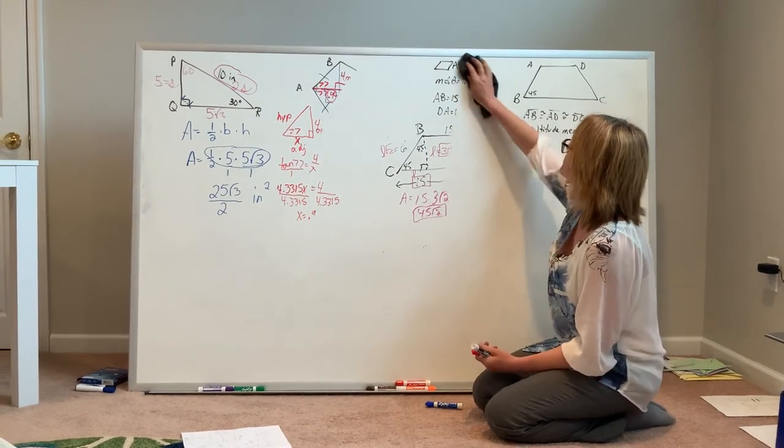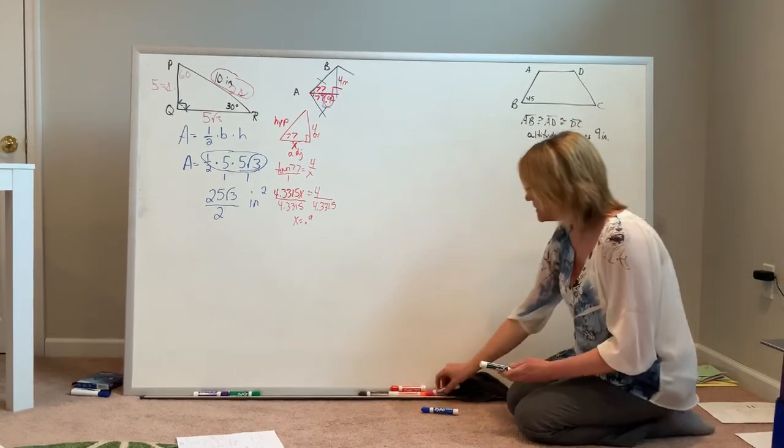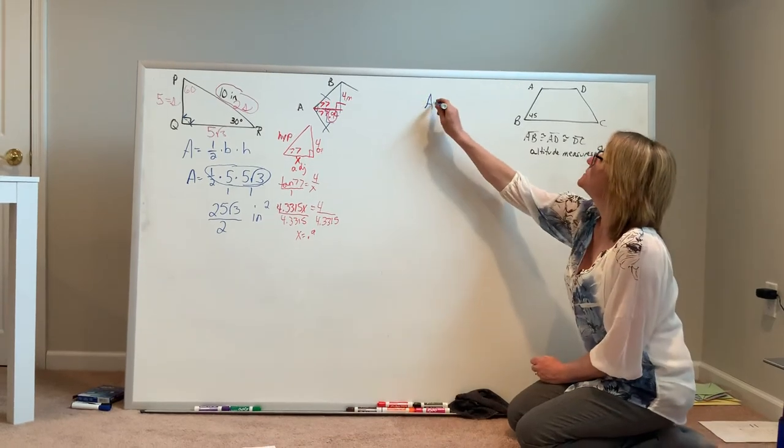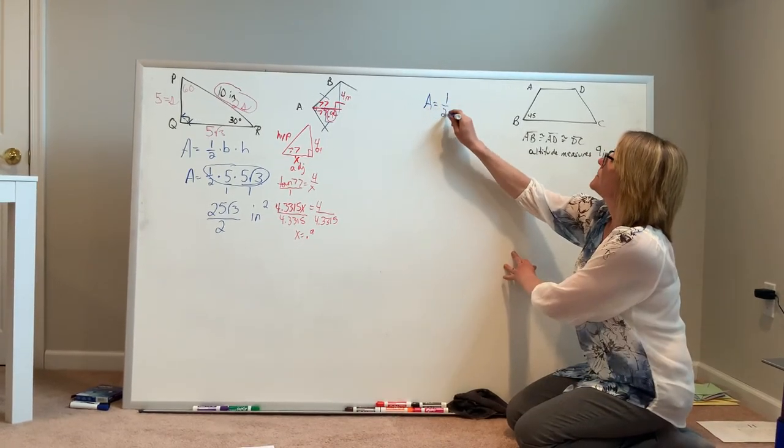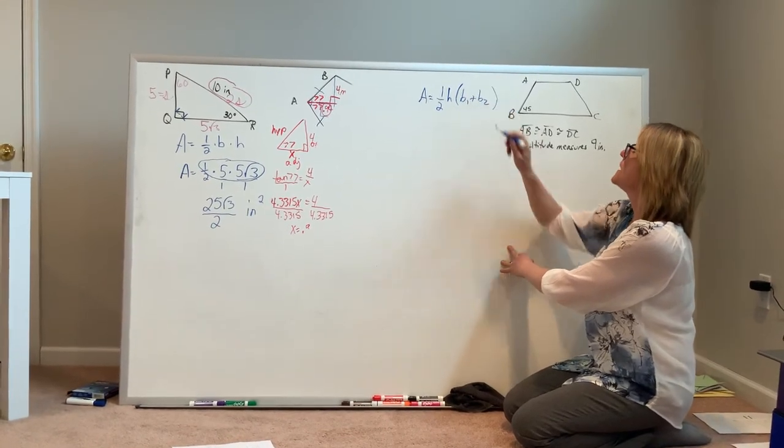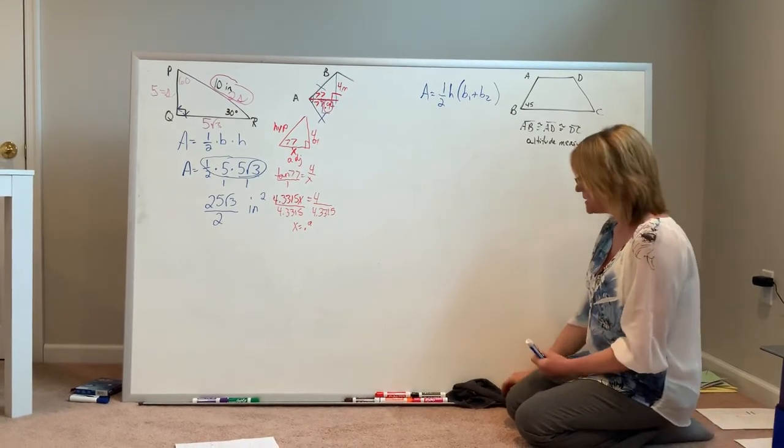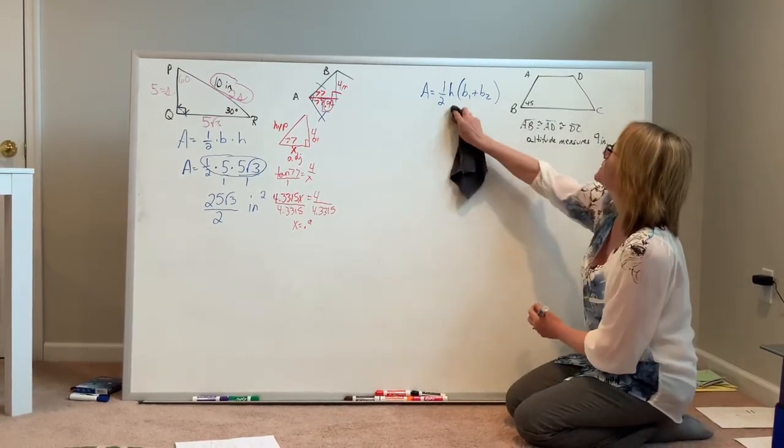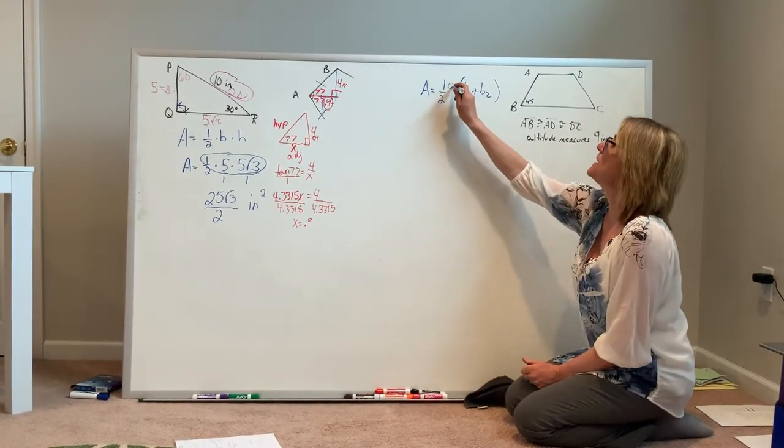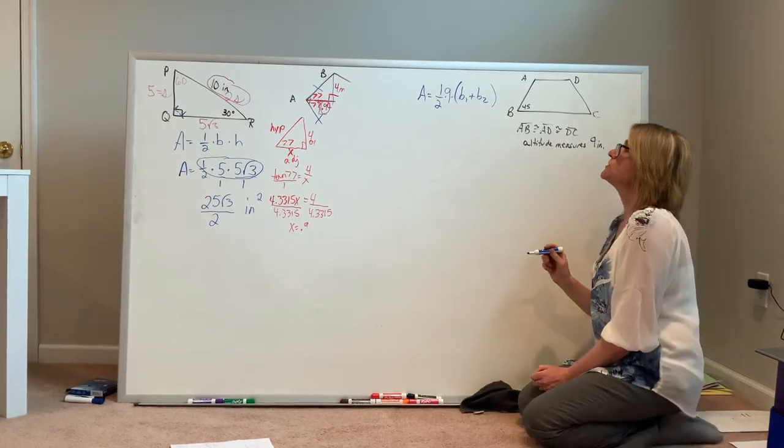For example number 4, we have a trapezoid. Trapezoid formulas are a little bit more involved just because they involve more dimensions, but I'm still going to start the same way. Write out my formula so that I can see exactly what I need in order to find the area. In this particular question, we're being told that the altitude has a measure of 9 inches, so I can begin by replacing the H with the value of 9. Now the question becomes, how do I find the lengths of the bases?